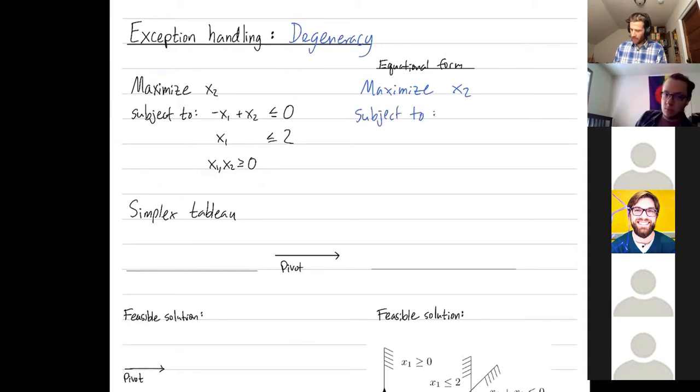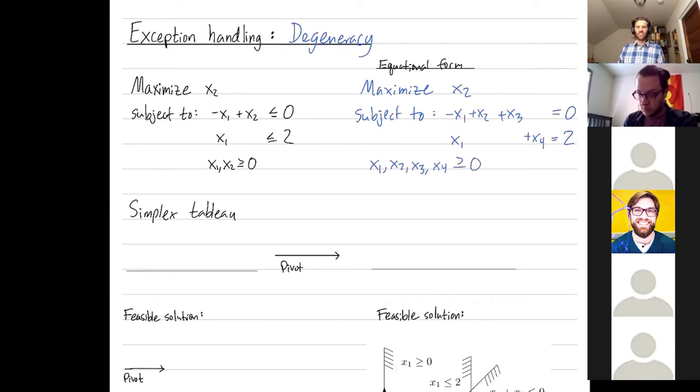I do that by introducing slack variables. So I want negative x1 plus x2 plus x3, that's the slack, to now be equal to 0, and x1 plus x4 to now be equal to 2. x4 is the slack in the prior equation. And now all four of my variables, including the two new slack ones, are non-negative.